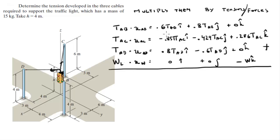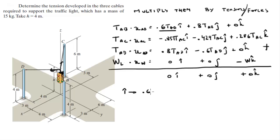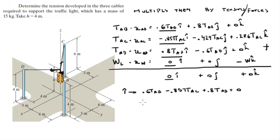When you add all these Cartesian vectors together, since the system is in equilibrium, the sum equals zero in i, j, and k. This lets us build three scalar equations. Adding all forces in the i-direction gives the first equation: 0.6·TAB - 0.857·TAC + 0.8·TAD = 0.